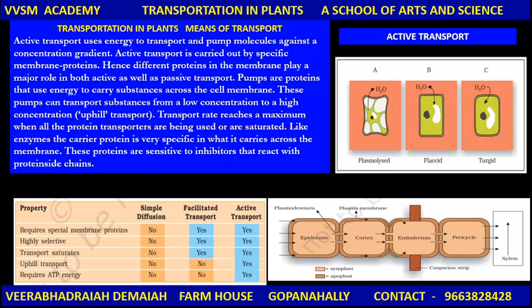Here is important — uphill transport. Transport rate reaches a maximum when all the protein transporters are being used or saturated. Like enzymes, the carrier protein is very specific in what it carries across the membrane. These proteins are sensitive to inhibitors that react with protein side chains. Pumps are proteins that use energy to carry substances across the cell membrane, transporting substances from a low concentration to a high concentration.